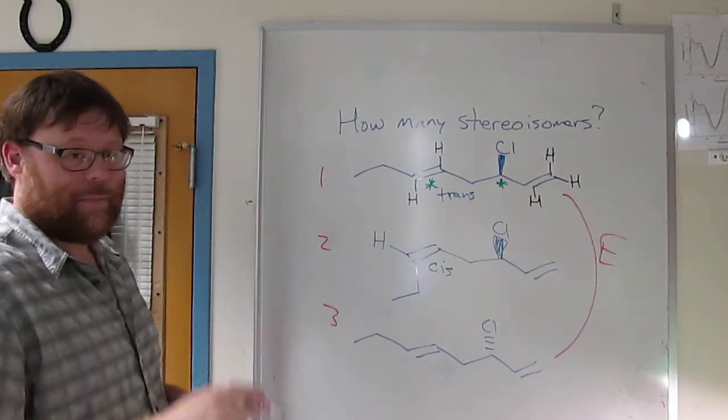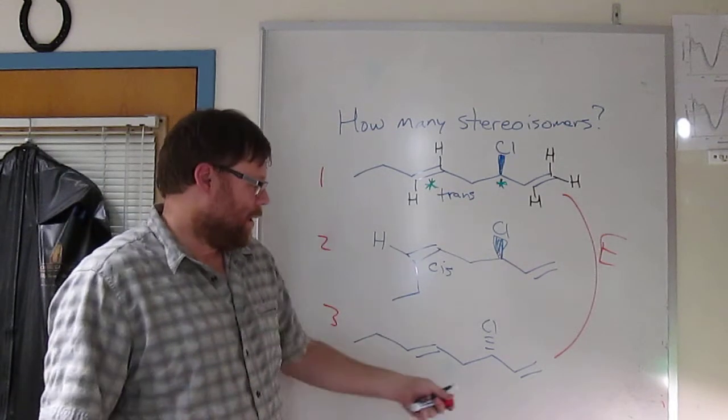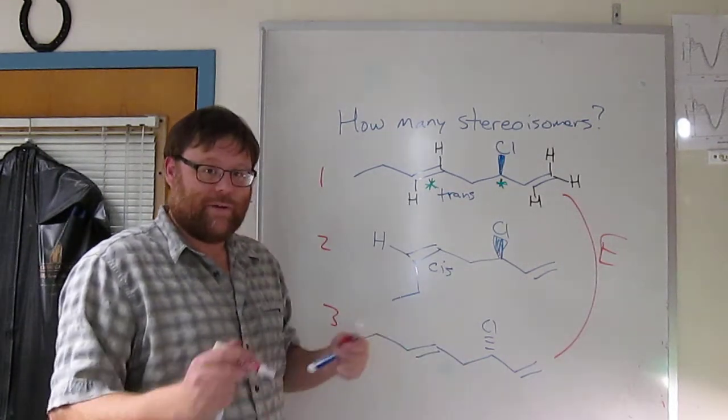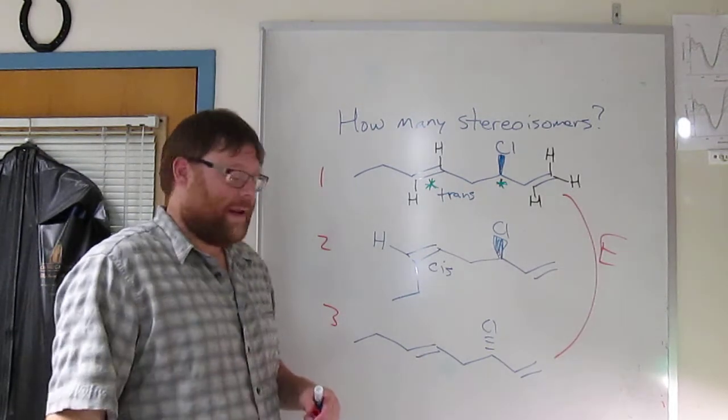You can convince yourself of that by trying to draw the mirror image. But if two structures are exactly the same, and the only thing that changes is the configuration of a chiral center, or chiral centers, if they all change, then the molecules are enantiomers.